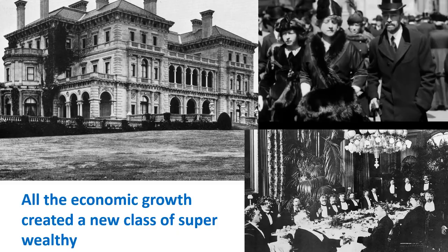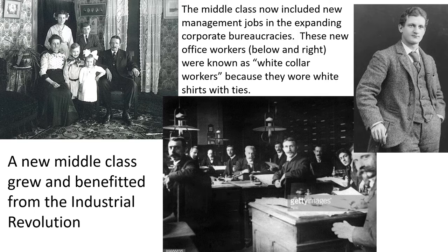All this economic growth created a new class of super wealthy. America had always had wealthy people, but most before were things like large plantations. In the late 19th century, we start seeing a degree of wealth that America really hadn't seen before — they had elaborate homes with all the new inventions. The companies this super class created had jobs for all the bureaucrats required to run these big companies, creating new management jobs in corporate bureaucracies. These office workers became known as white-collar workers because they wore white shirts with ties. So we're creating a super class of wealthy, but also seeing a new middle class grow and benefit from the Industrial Revolution.